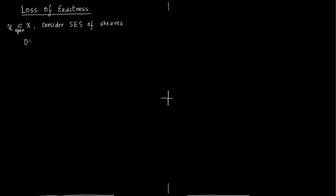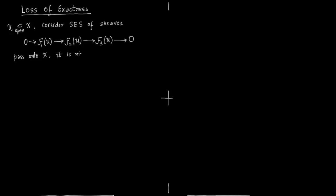Here you have 0 → F1(U) → F2(U) → F3(U) → 0. The important point to notice is when you pass from U to the entire space X, this sequence might not be exact anymore. In this short exact sequence of sheaves, the first map from F1 to F2 is injective and F2 to F3 is surjective, but when you take this sequence on the entire space X, the last map from F2 to F3 may not be surjective anymore. That is how you lose exactness.